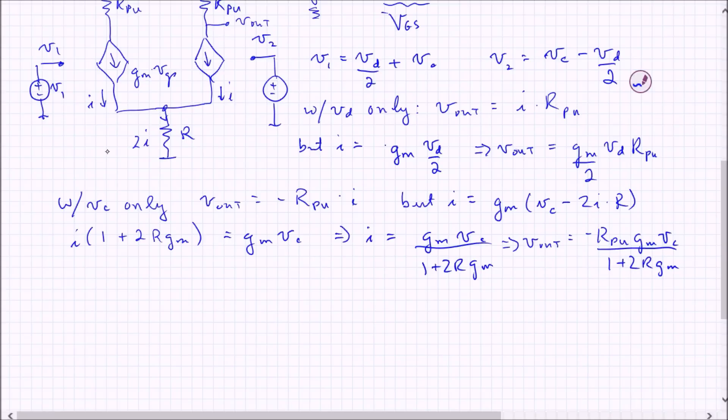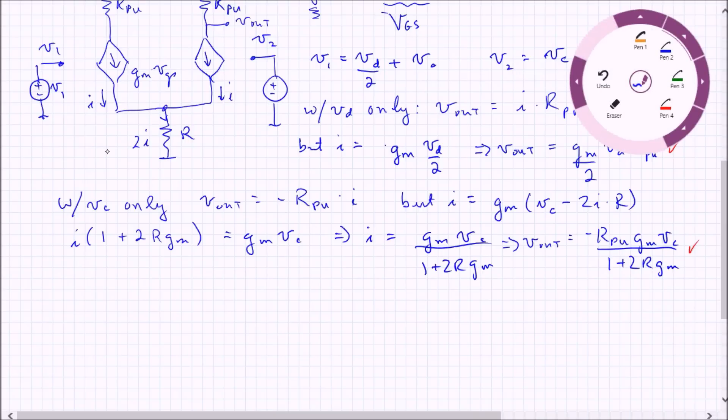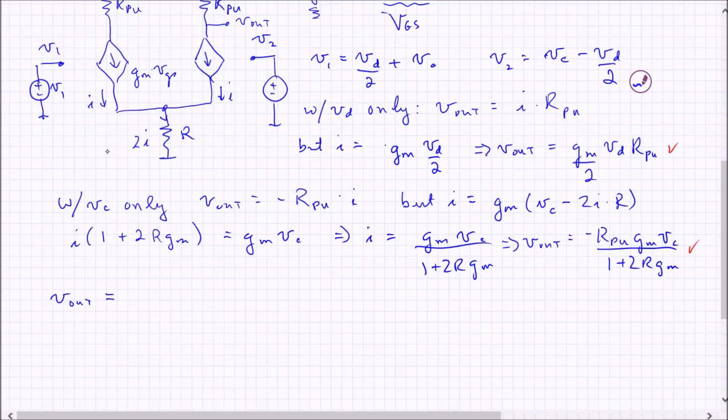Now we take these two Vouts, this one and this one, and we sum them together, and we get Vout total is going to equal GM over 2VD R pull-up minus R pull-up GM Vc over 1 plus 2R GM. And now if we just multiply, we factor this 1 plus 2R GM out, we'll get, actually we can factor out this GM too. Let's kind of highlight the things that we're going to factor out here.